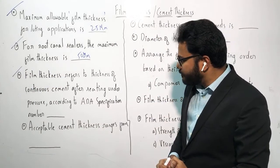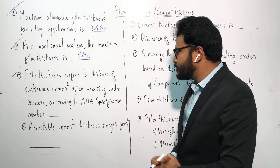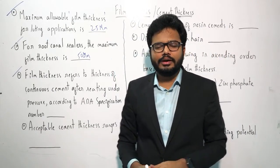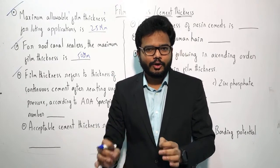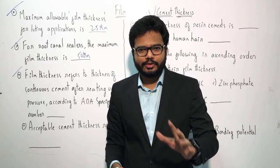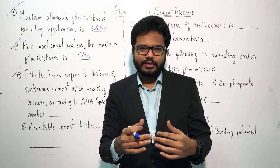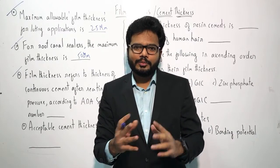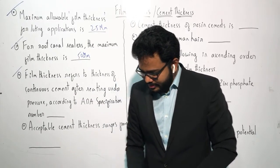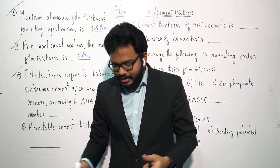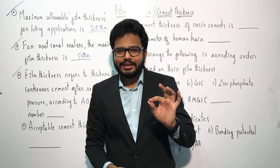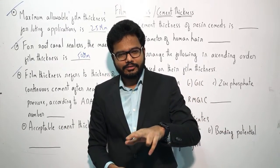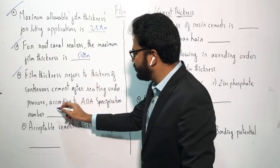Film thickness refers to the thickness of continuous cement after seating under pressure, according to ADA specification number 96. They might not ask the specification number directly, but you should recognize it if options are given. The ISO equivalent is ISO 9917, which corresponds to ADA specification number 96.